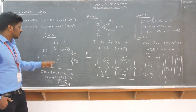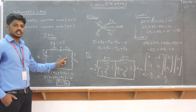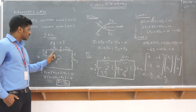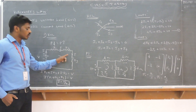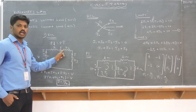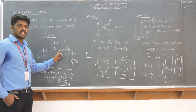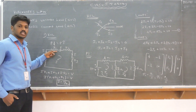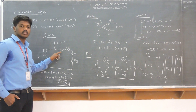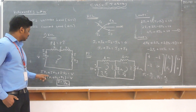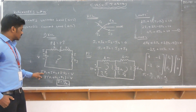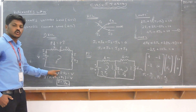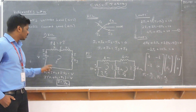Consider the current flowing through resistances R1, R2, and R3 in a series circuit. In a series circuit, the current is the same but the voltage is different. From this, Kirchhoff's Voltage Law gives: I×R1 + I×R2 + I×R3 equals the rising voltage V.